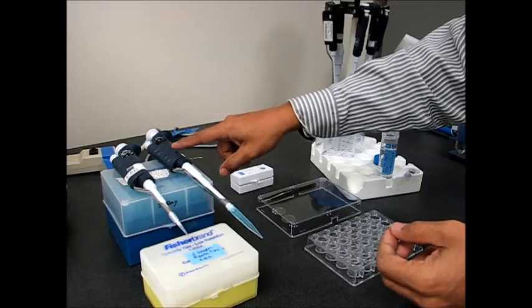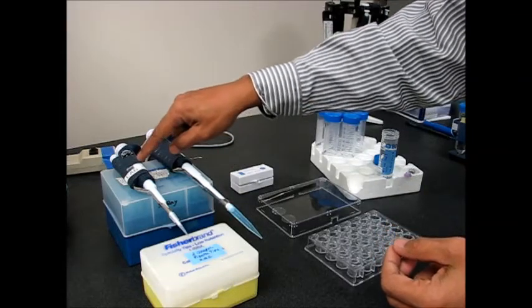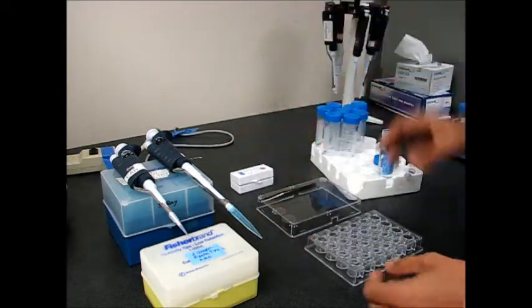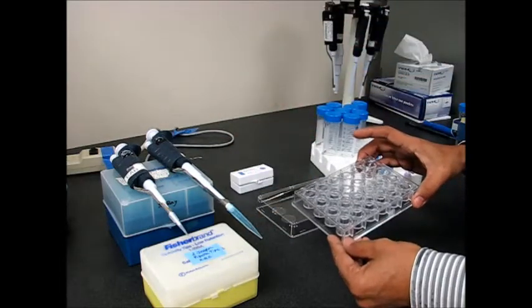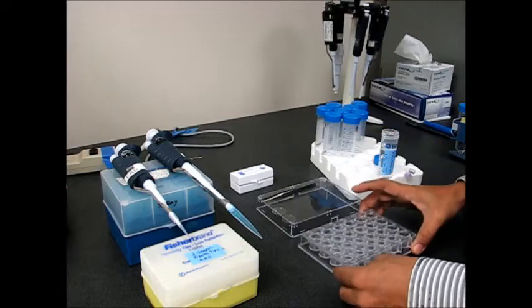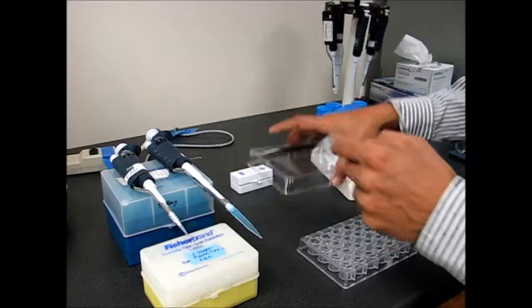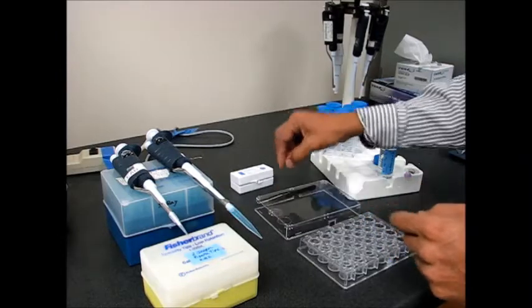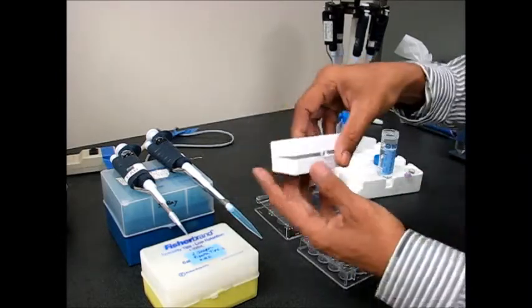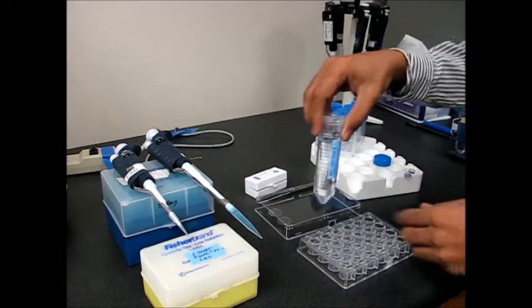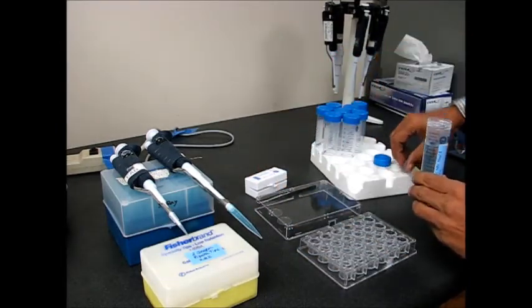A 1ml pipette, 20ml pipette and tips for those. We have a tray in which we are going to set up the crystallization, a couple of cover slips, forceps, and this is where the cover slips actually come from. The precipitant solution and the protein solution.